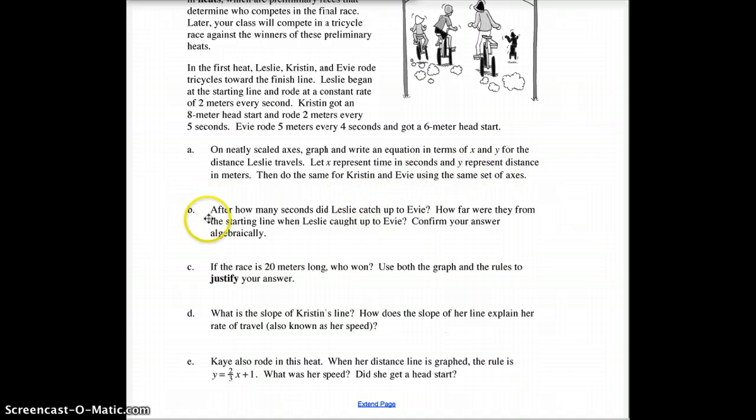Part B: This is a question based on your graph. After how many seconds did Leslie catch up to Evie? You'll answer that here. How far were they from the starting line when Leslie caught Evie? Then, using your equal values method, confirm your answer algebraically—set one side equal to the other side and solve algebraically. You only need to solve for the x, though if you plug it in, it should match up with your y too.